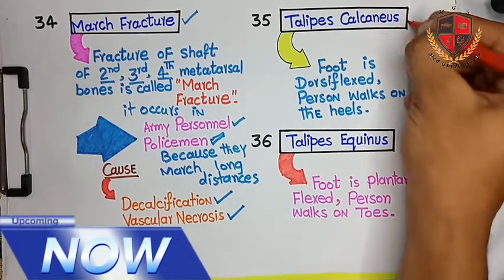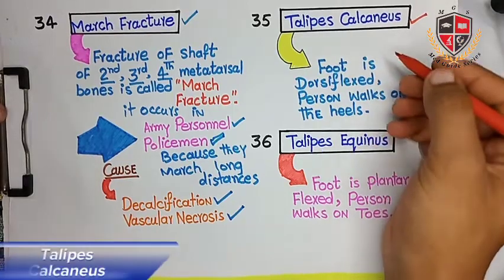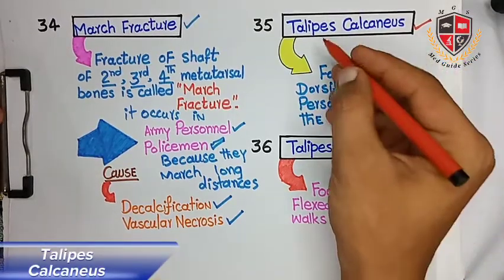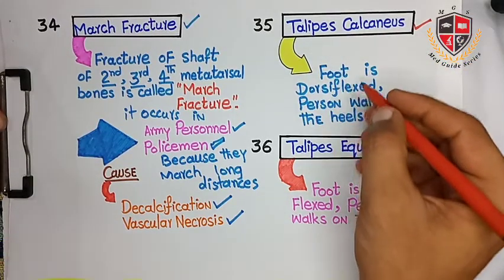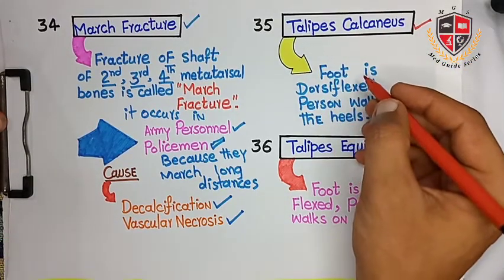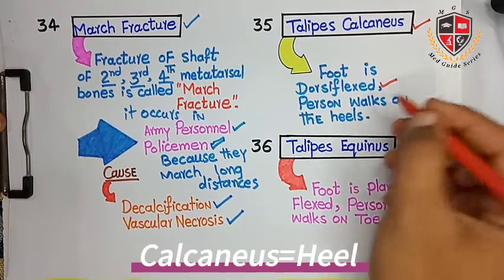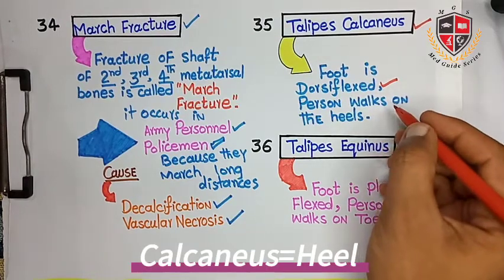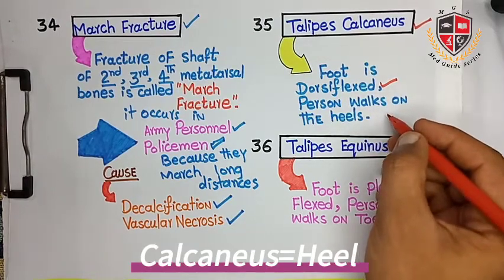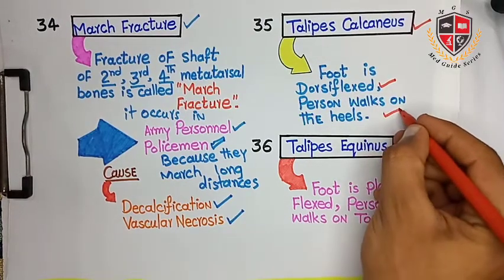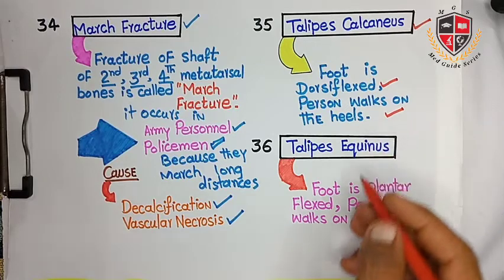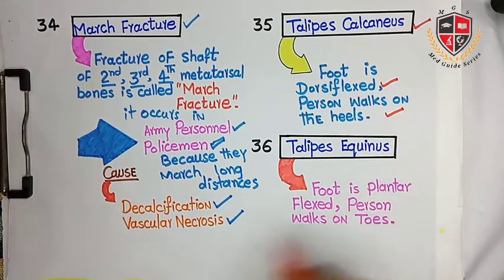The next clinical is talipes calcaneus. In this condition the foot is dorsiflexed, and the person walks on the heels. Calcaneus means heel.